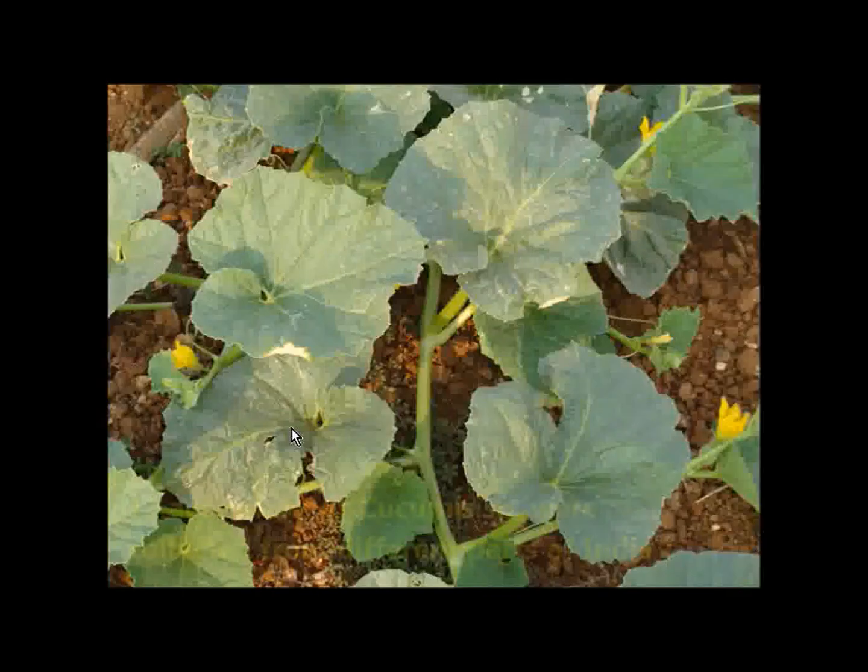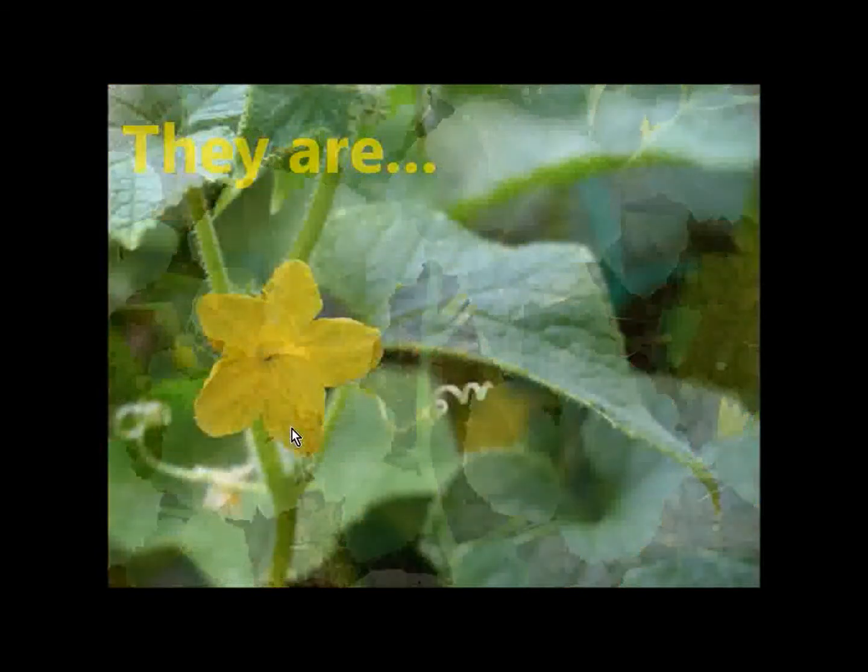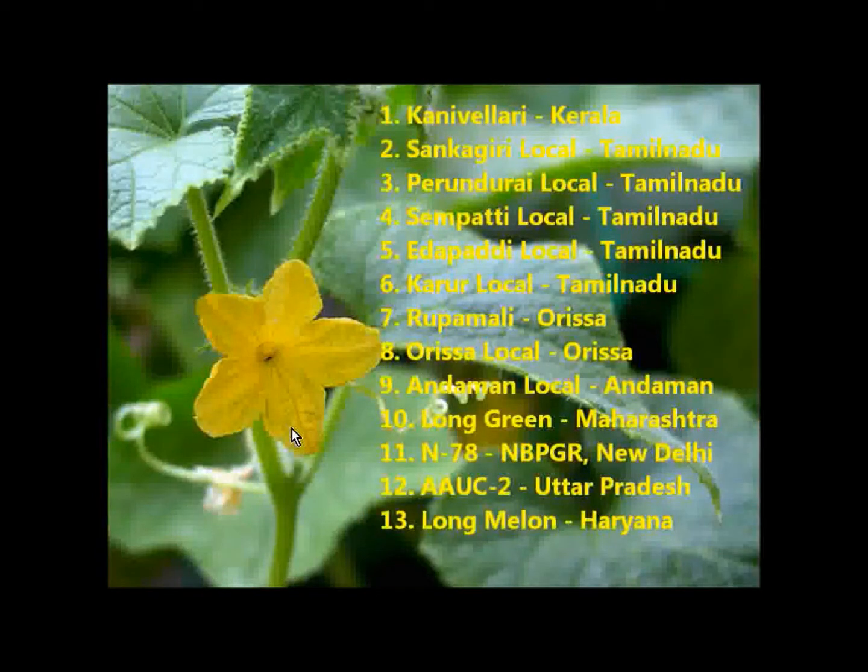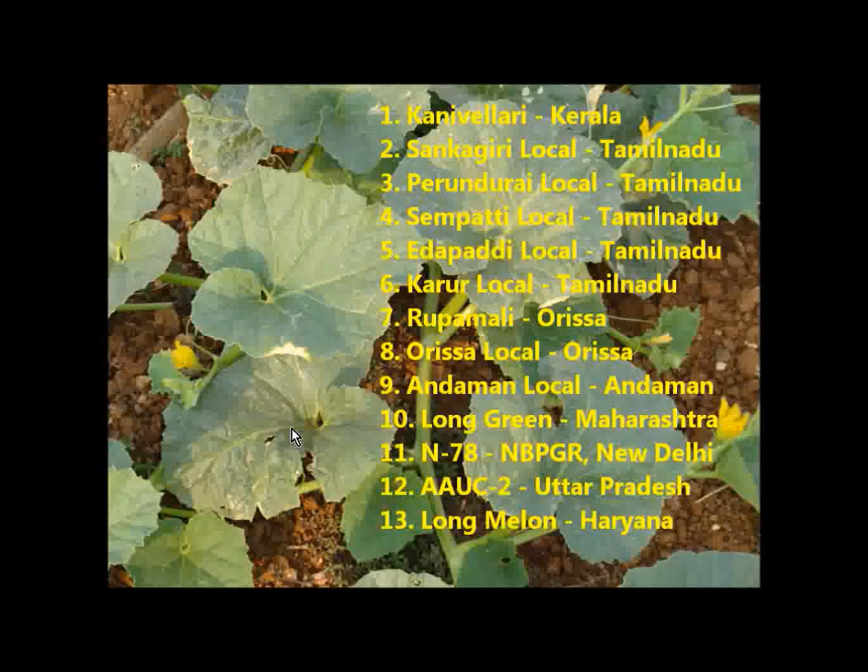Materials and methods. Thirteen accessions of Cucumus species were collected from different parts of India. They are Kanivalari from Kerala, Sangagiri Local, Perundurai Local, Sempati Local, Edapadi Local, Karur Local from Coimbatore, Rupamalli and Orissa Local from Orissa, Andaman Local from Andaman, Long Green from Maharashtra, N78 from New Delhi, AAUC2 from Uttar Pradesh, and Long Melon from Haryana.